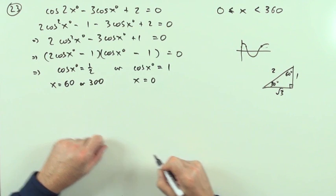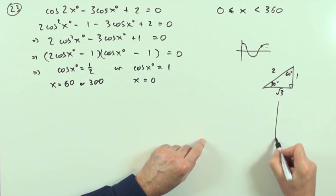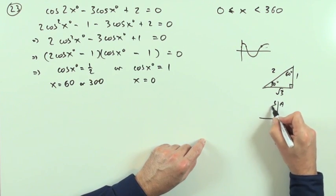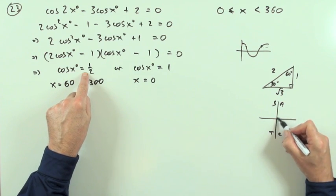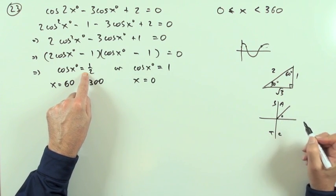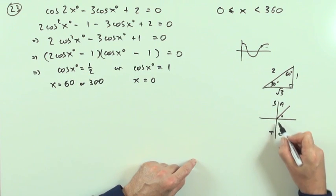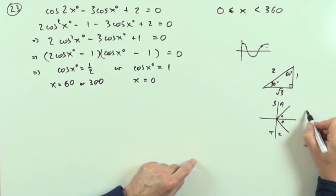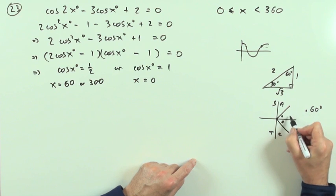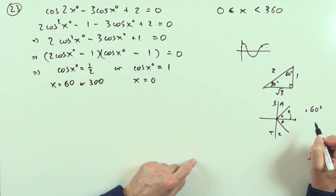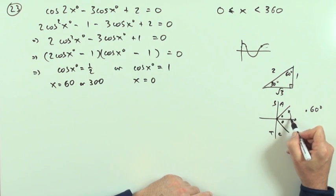I could put in there 360 minus 60, but I'll just put the answer: 60 or 300. Or you could use the CAST diagram: all sine tan cos. The cosine is positive, so either in the first quadrant, so your 60 degrees is there, or you're in the fourth quadrant, so your 60 degrees is there.